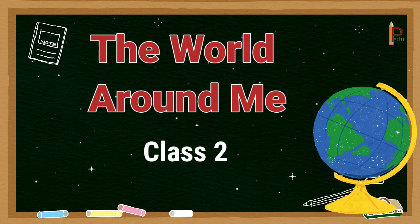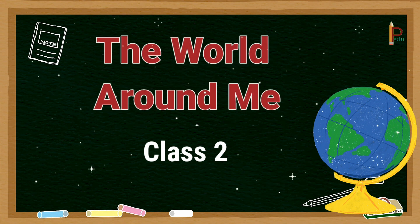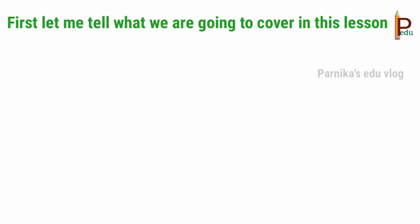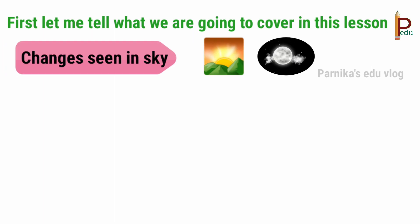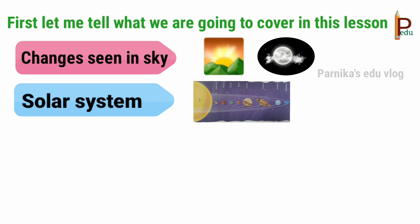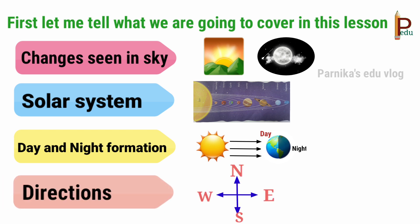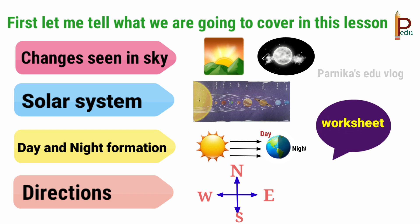Hello children, welcome back to the channel. Today we are going to learn about the world around me for class 2. First, let me tell you what we are going to cover in this lesson: changes seen in sky, solar system, day and night formation, and directions. All these are explained clearly and followed by a worksheet which gives a quick revision.